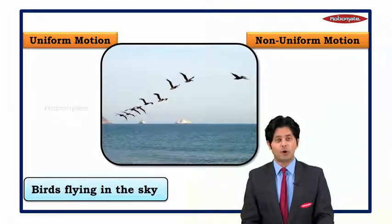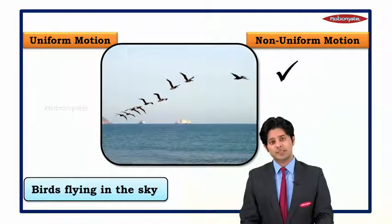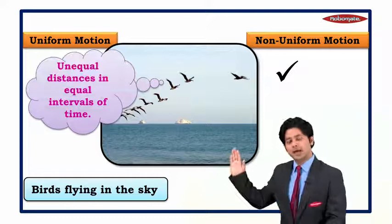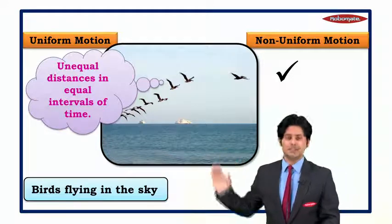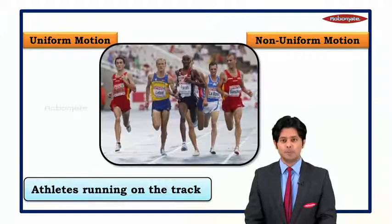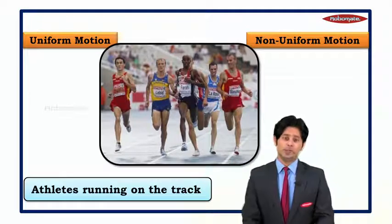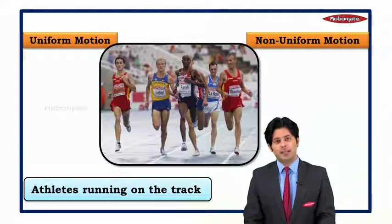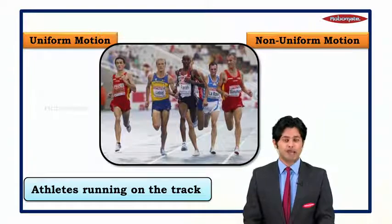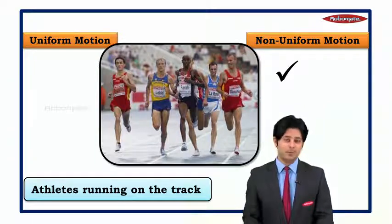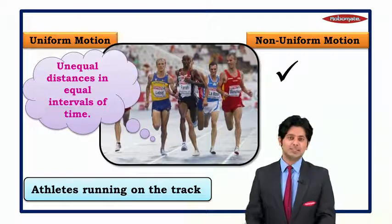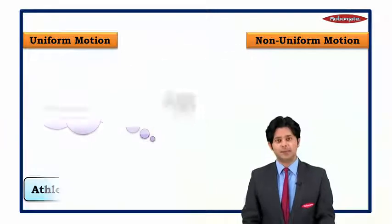The next example: birds fly in the sky — again, something quite familiar. This is non-uniform motion because they cover unequal distance in equal interval of time. The final example: athletes running on a track. This is also non-uniform motion, because they cover unequal distance in equal interval of time.